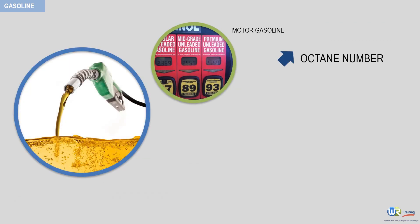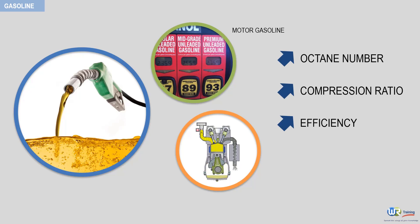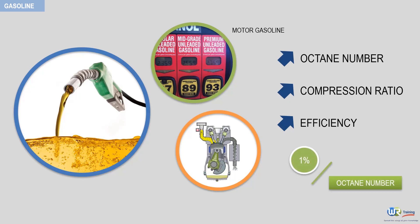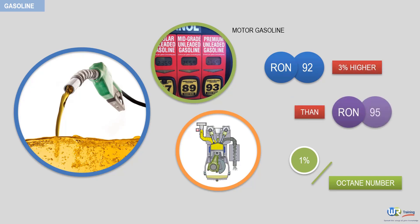A high octane number means that the engine using the fuel can have a high compression ratio, which means higher engine efficiency. The reduction in fuel consumption that results is of the order of one percent per octane number. To put it simply, the fuel consumption of an engine designed to run on 92 RON fuel, with all other things being equal, will be about three percent higher than that of an engine designed to run on 95 RON fuel.